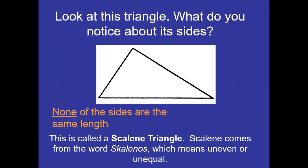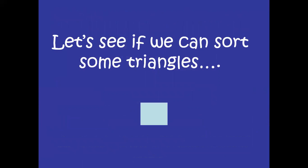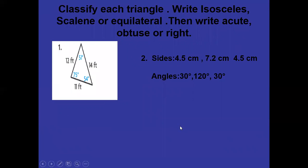Let's sort some triangles. Look at this triangle: the three sides are 12 feet, 14 feet, and 11 feet — all different. Based on sides, it is a scalene triangle. All three angles are also less than 90 degrees, so based on angles it is an acute triangle. You can name it as scalene acute.